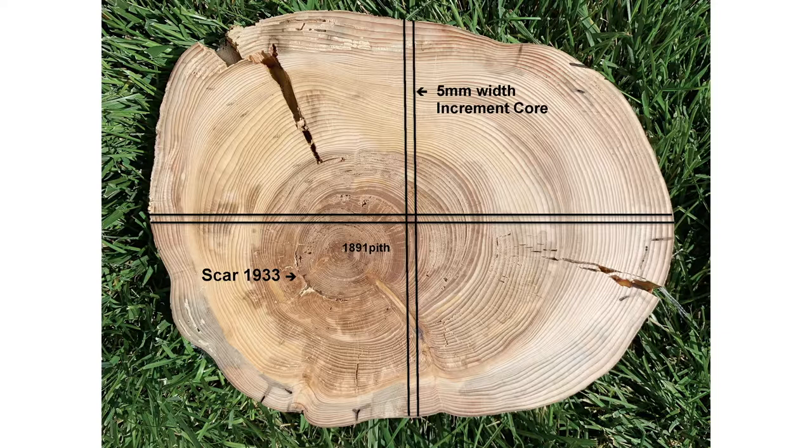Earlier I talked about using cross-sections versus just cores. These lines indicate a five-millimeter core — the size of the tool you'd put into the tree and turn. You can do these to live trees, which is nice and doesn't really impact the tree. But the problem is when you put this tool into the tree, you might miss the center. Imagine sampling in four directions at 90 degrees to each other — you can see that we might have missed a scar from 1933. It doesn't give us the whole picture, so for this study we tried to grab as many cross-sections as we possibly could: over 600.